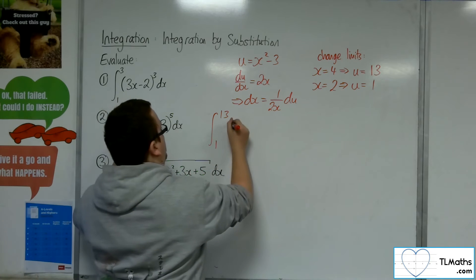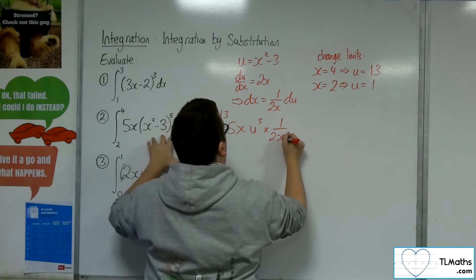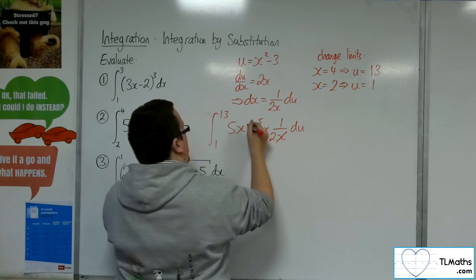We've got 5x, we've got u to the power of 5, and we've got 1 over 2x du. So the x's will cancel.